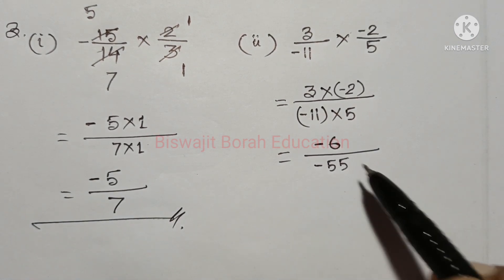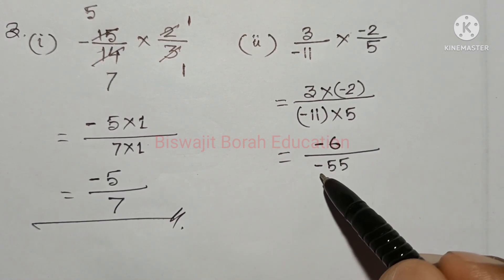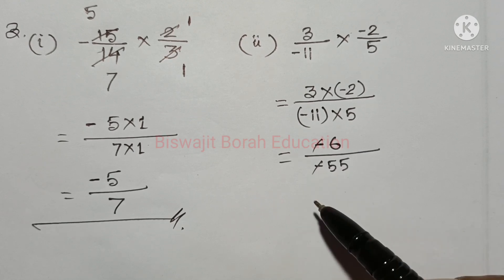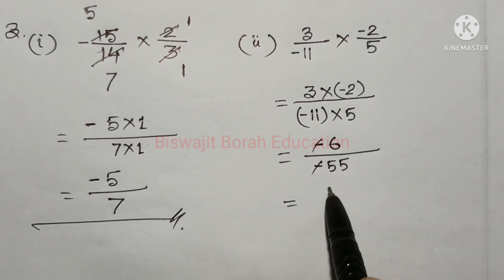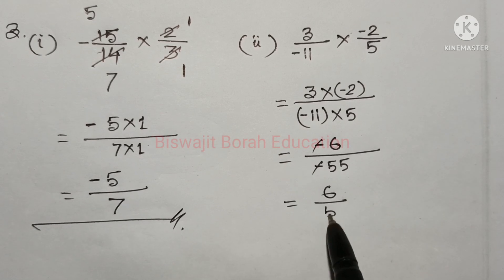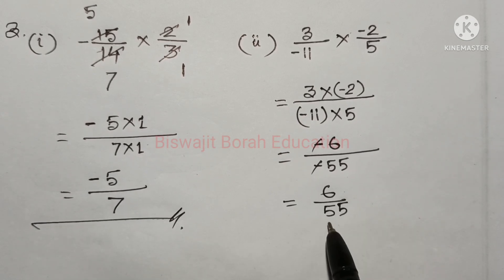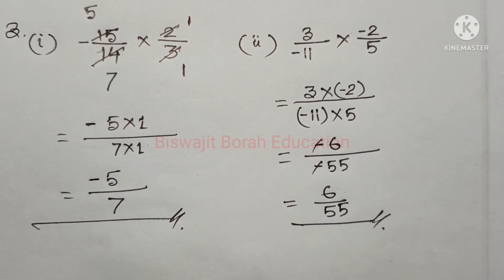So, taking the upper value as 6 and the lower value as 55, we get 6 by 55 as the final answer for this problem.